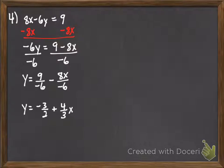which again is really not what we're worried about in this problem. But that minus 8x over negative 6, two negatives become a positive, we get 4 thirds x. And so our slope is 4 thirds.